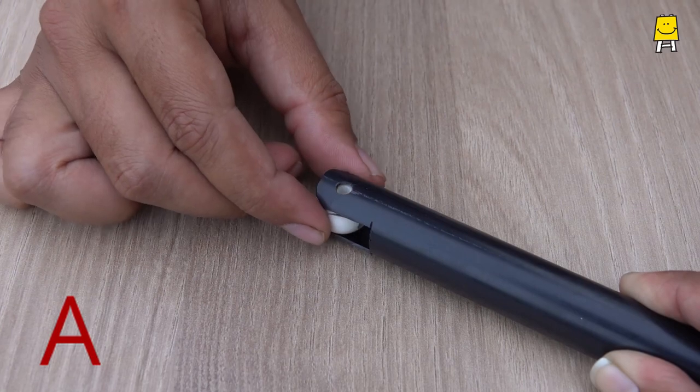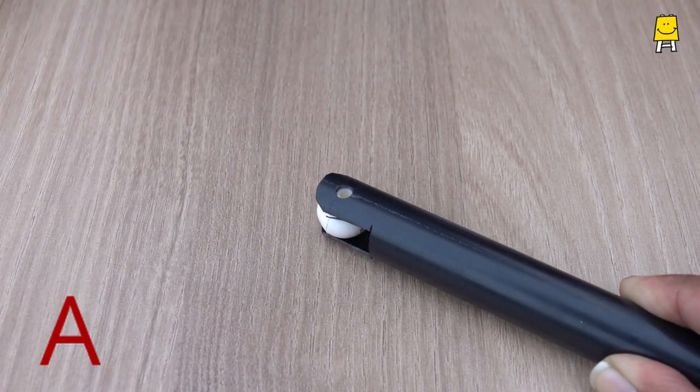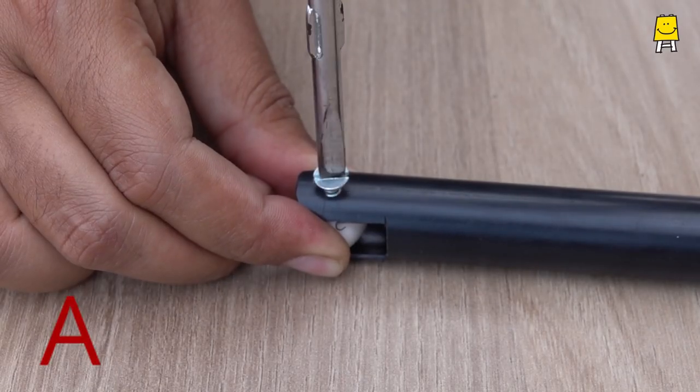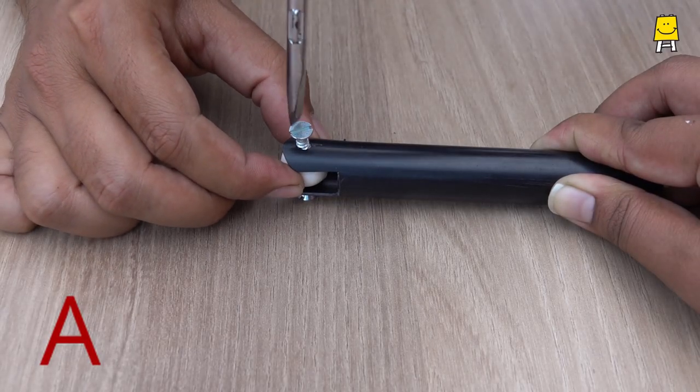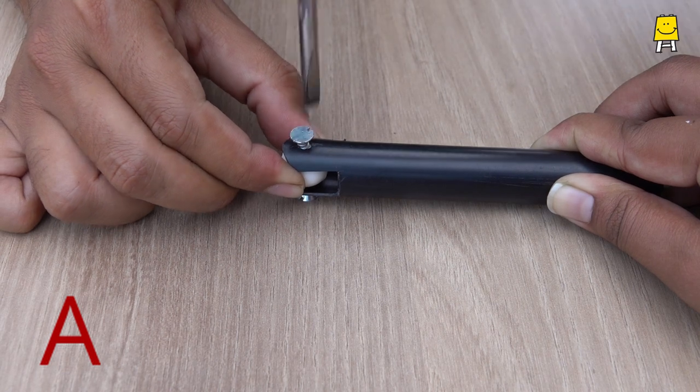Place the bead in the cut section of pipe A. Insert a screw through the pipe into the bead. Repeat this on the opposite side and tighten the screws.